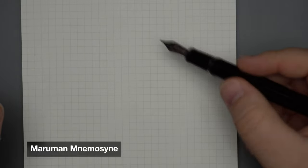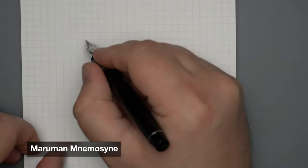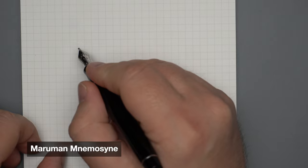Here we have the Maruman Mnemosyne paper with the 5mm grid that I've been using for these writing samples, and here's what this pen writes like.